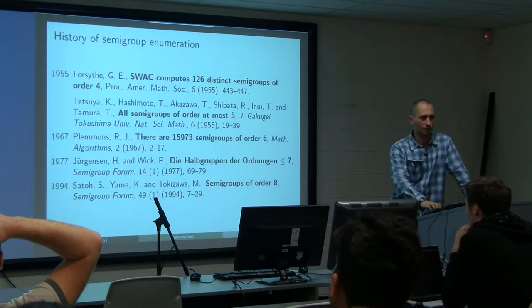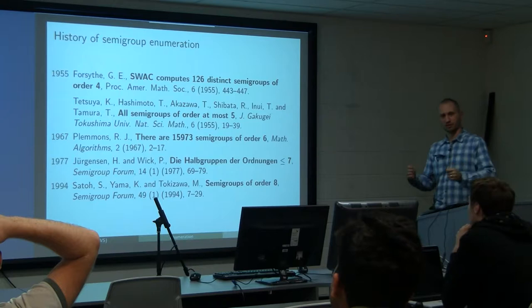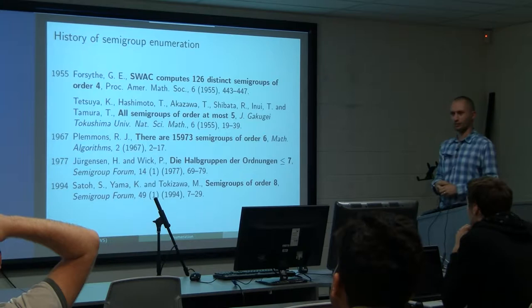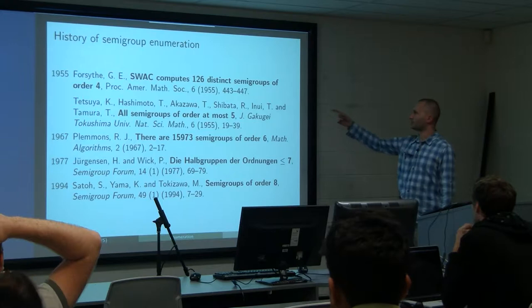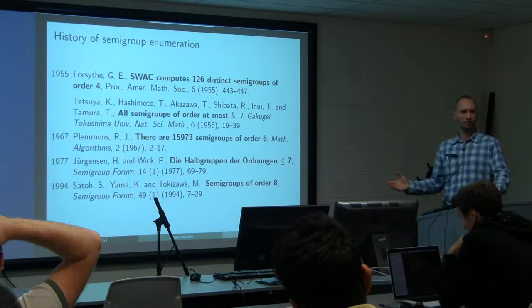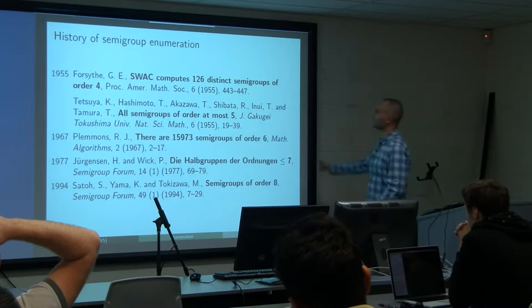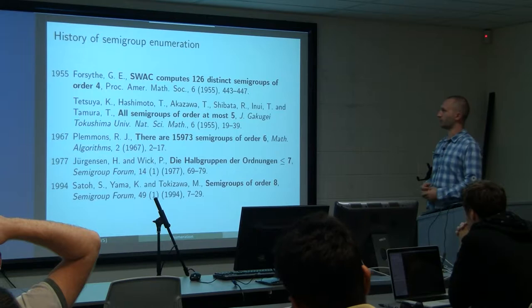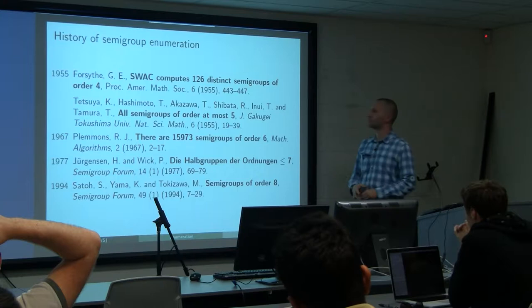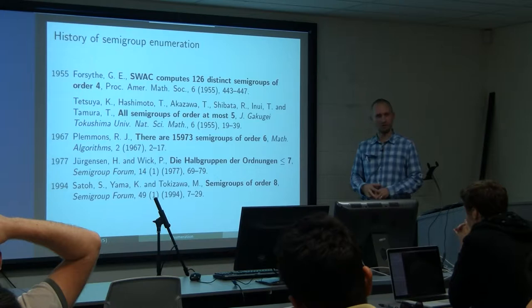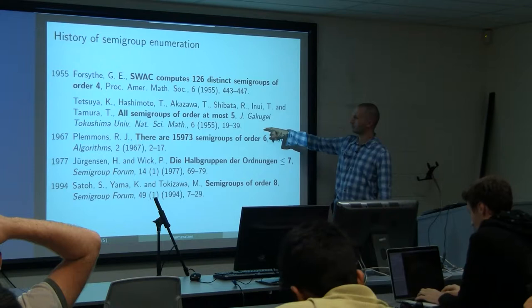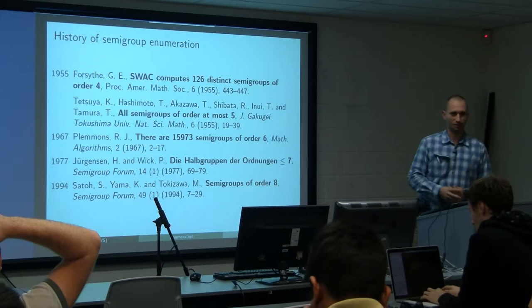Needless to say, that doesn't stop people doing it. Computational semigroup theory is actually not that young a field. In 1955, mathematicians barely had access to computers — and what did they do? They did computation on semigroup theory: they tried to enumerate all semigroups of size four and found 126 of them. Then there was a race, and the Japanese picked that up and did all semigroups of size five.